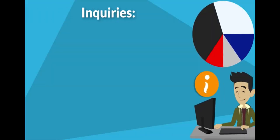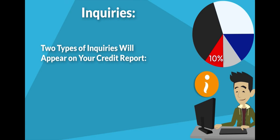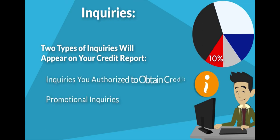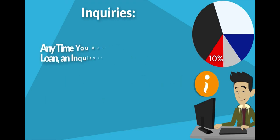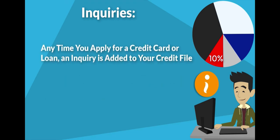The final factor in your credit score is inquiries, which also makes up about 10% of your overall score. Keep in mind that there are two types of inquiries that appear on your credit report: inquiries that you authorized for obtaining credit, and promotional inquiries. Any time you apply for a credit card or loan, an inquiry is added to your credit file.